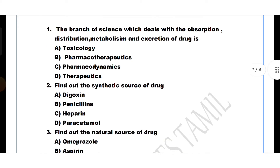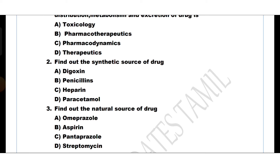Question number 2. Find out the synthetic source of drug. Option A: Digoxin, Option B: Penicillin, Option C: Heparin, Option D: Paracetamol. Paracetamol is the synthetic source of drug. Option D is the answer.